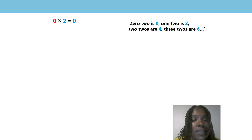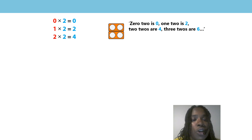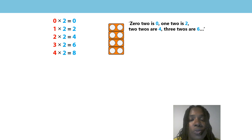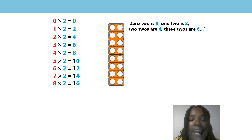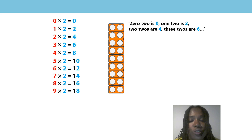0 times 2 is 0. 1 times 2 is 2. 2 twos are 4. 3 twos are 6. 4 twos are 8. 5 twos are 10. 6 twos are 12. 7 twos are 14. 8 twos are 16. 9 twos are 18. Great job. Thank you for helping me.